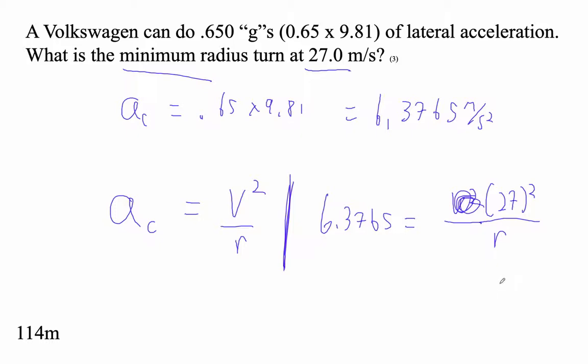Okay, so let's see. 27 squared divided by the answer I just got. Pretty sure that will give us the right answer. Yeah, r is 114.3 meters with, you know, neglecting sig figs.